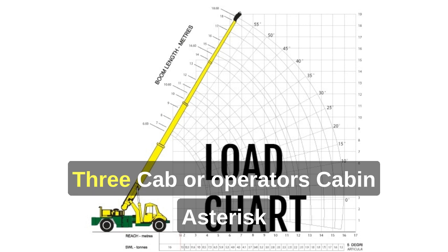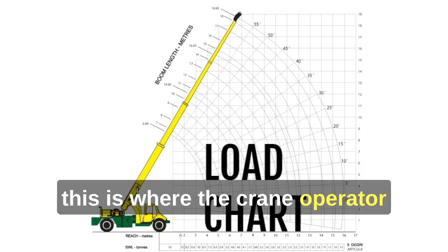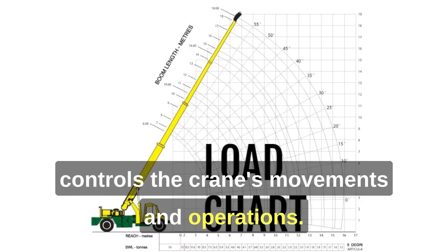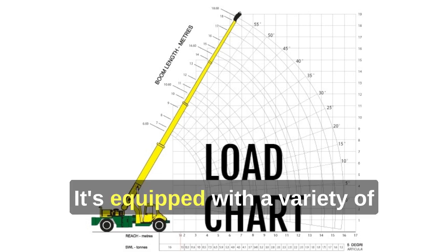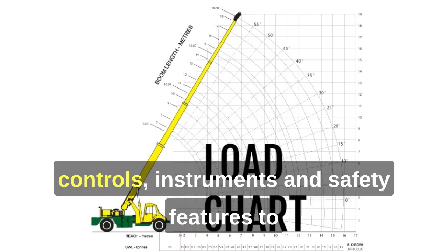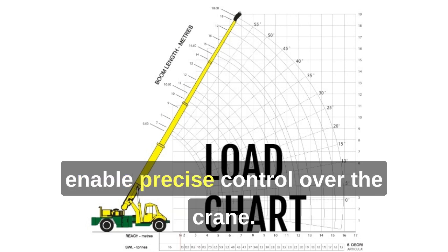3. Cab or Operator's Cabin — This is where the crane operator controls the crane's movements and operations. It's equipped with a variety of controls, instruments, and safety features to enable precise control over the crane.